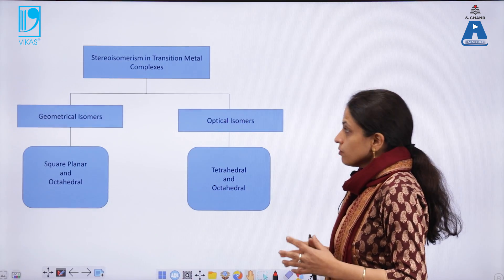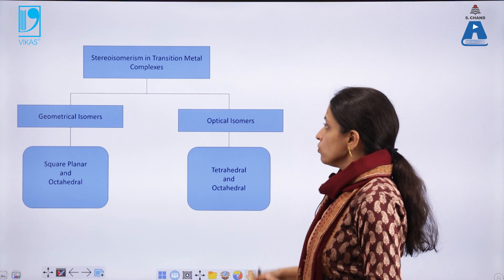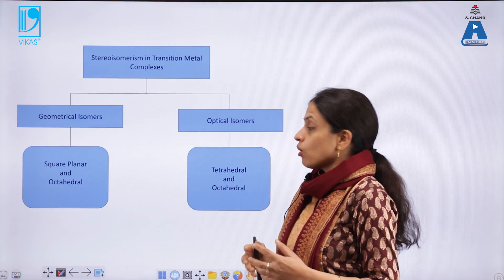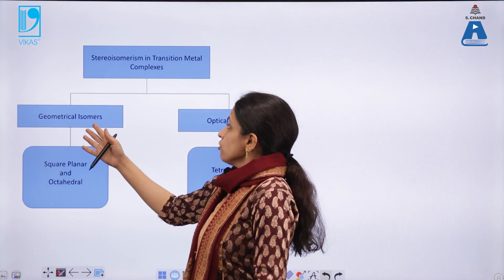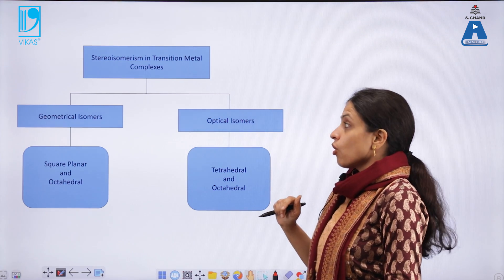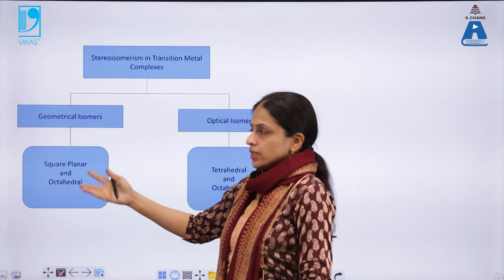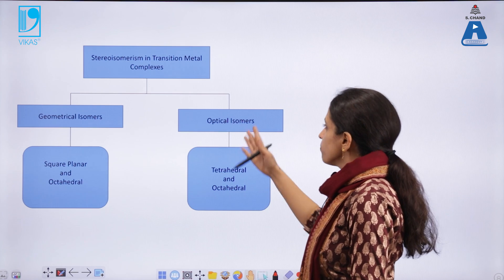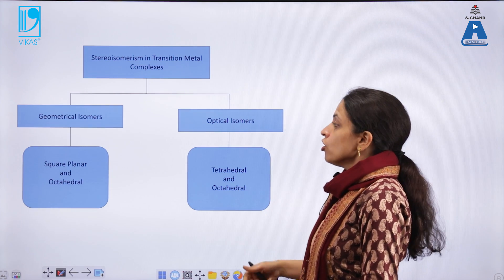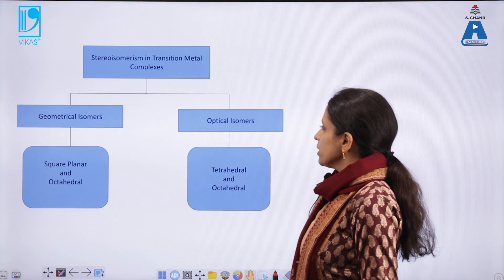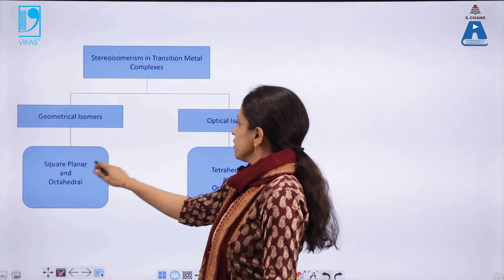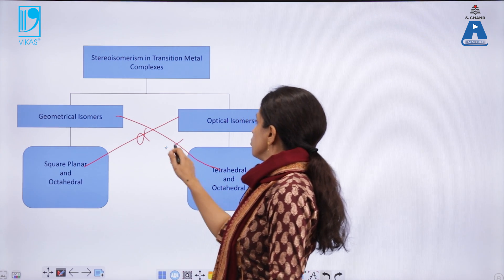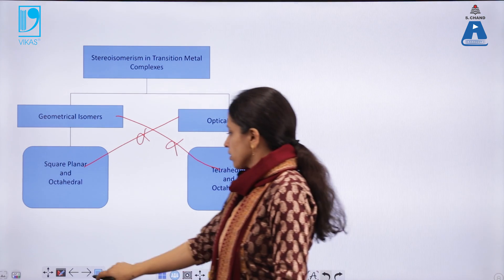Stereoisomerism in transition metal complexes can be of two types, just like the stereoisomerism of organic molecules discussed in our previous lecture. They can be classified into geometrical isomers and optical isomers. Geometrical isomerism (cis-trans isomerism) can be exhibited by square planar and octahedral complexes, whereas optical isomerism is exhibited by tetrahedral and octahedral complexes. In other words, square planar complexes will not show optical isomers, and tetrahedral complexes will not show geometrical isomers.